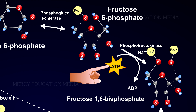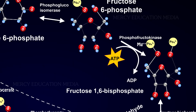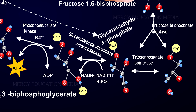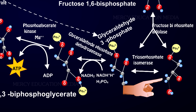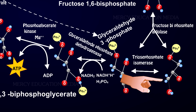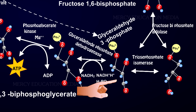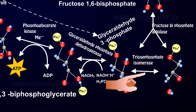ATP is dephosphorylated to ADP. Fructose 1,6-bisphosphate is cleaved by the enzyme aldolase into 2 molecules of 3C compounds: dihydroxyacetone phosphate (DHAP) and glyceraldehyde-3-phosphate. These 2 trioses are isomers.